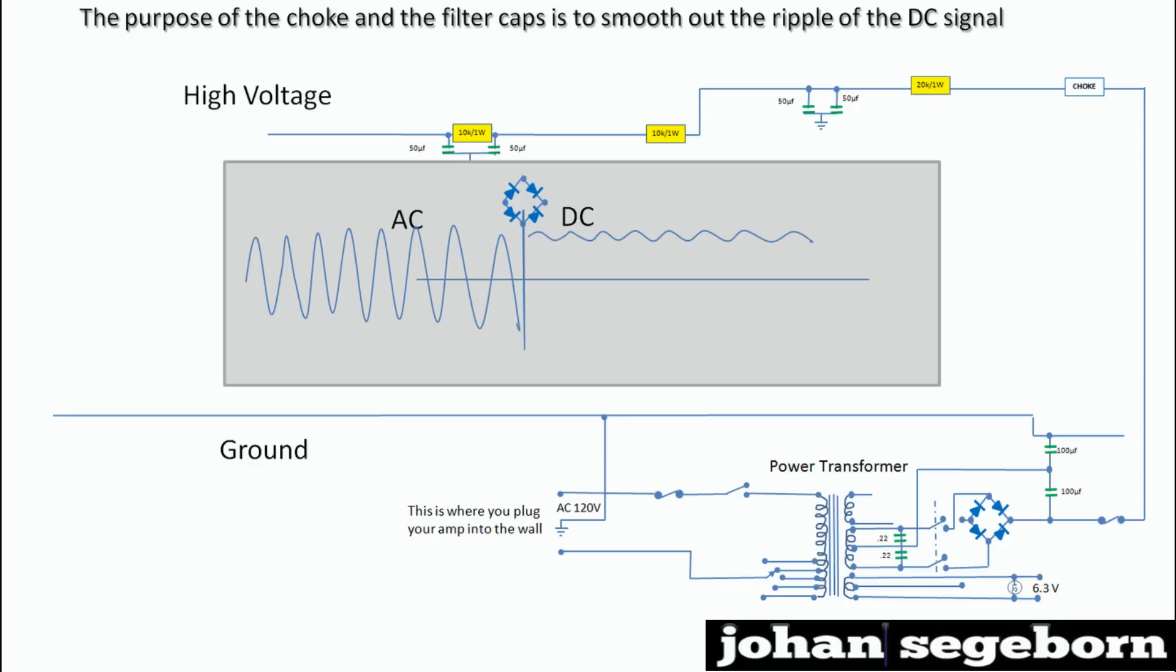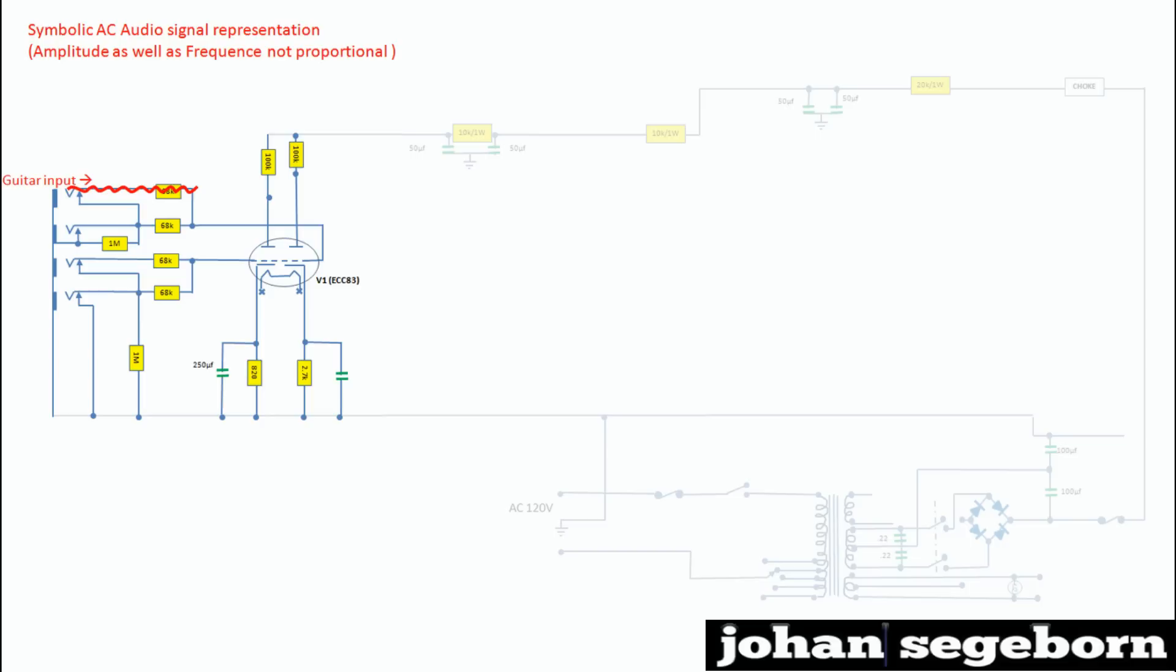Well, as you probably know, Marshall Superlead has four inputs. And here we're using the input one and the high-level one. And the first thing we encounter then are the grid resistors. One in series, the grid stopper, and one in parallel, the grid leak resistor. And the purpose of those are basically to regulate the signal that goes into the tube, to block radio frequencies and to avoid that blocking distortion occurs.